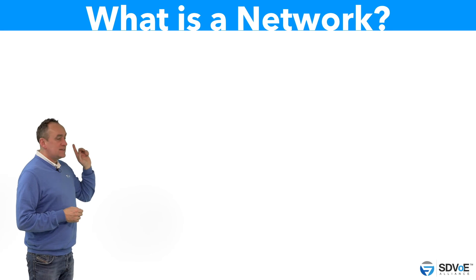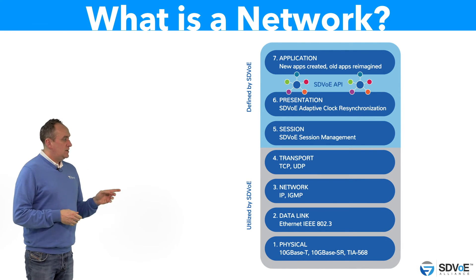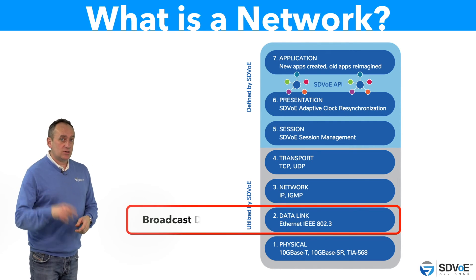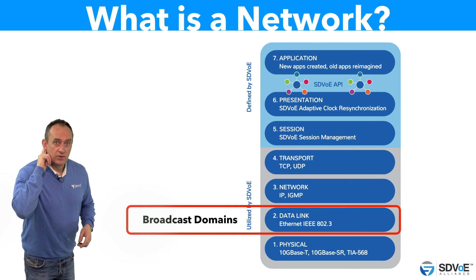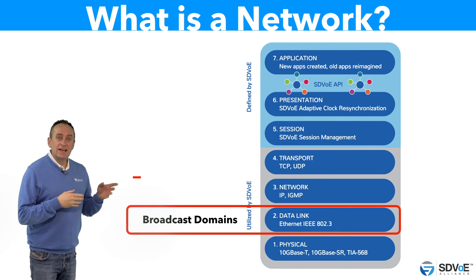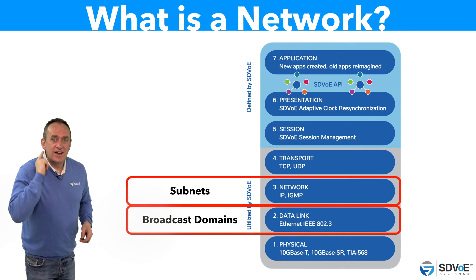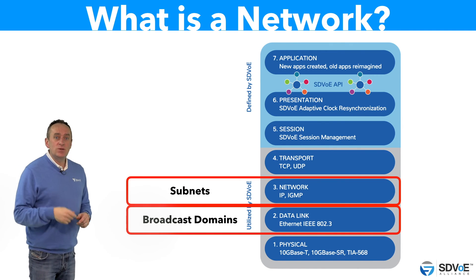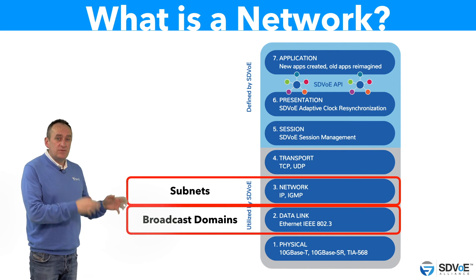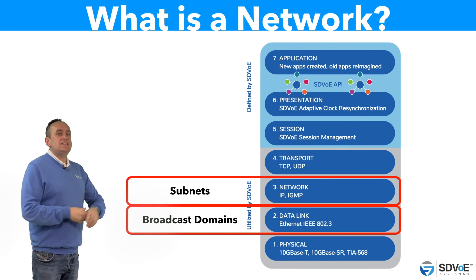So, what is a network? Using the OSI model as a reference: networks are created at layer 2 and we call these networks broadcast domains. Networks are connected together at layer 3, and these connecting networks are called subnets. Stay tuned for more courses which further explain how layer 2 and layer 3 networks are subdivided and managed for greater network efficiency here on the SDVoE Academy.